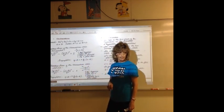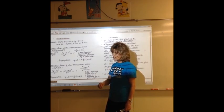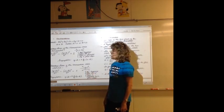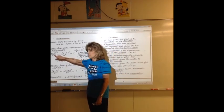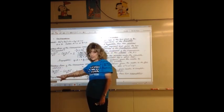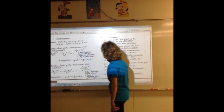For hyperbolas, A squared is going to be the first denominator, whether it's the biggest or not. On ellipses, A squared is the biggest denominator. It might be under X, it might be under Y. On hyperbolas, A squared is the first denominator, and it's always under the positive term.